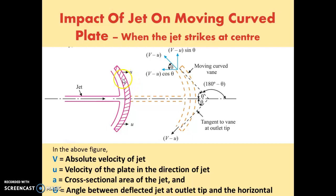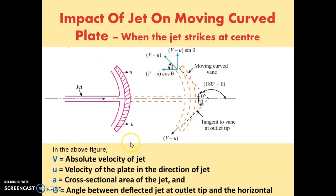The plate is not stationary — it is a moving curved plate moving with velocity u in the forward direction. When the jet strikes the plate, it gets deflected and travels tangentially along the plate and comes out at the exit.